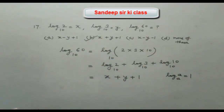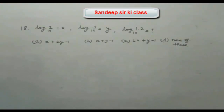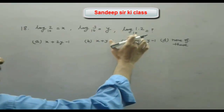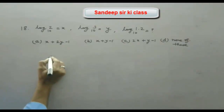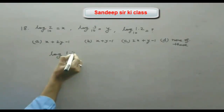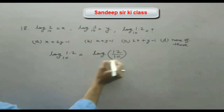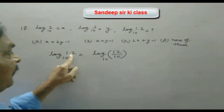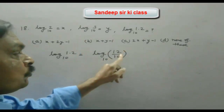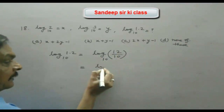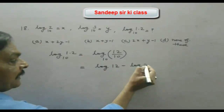So option B, x + y + 1, is correct. Moving to question number 18: given log 2 (base 10) = x and log 3 (base 10) = y, find log 1.2 to the base 10. We write 1.2 as 12/10 in fractional form.